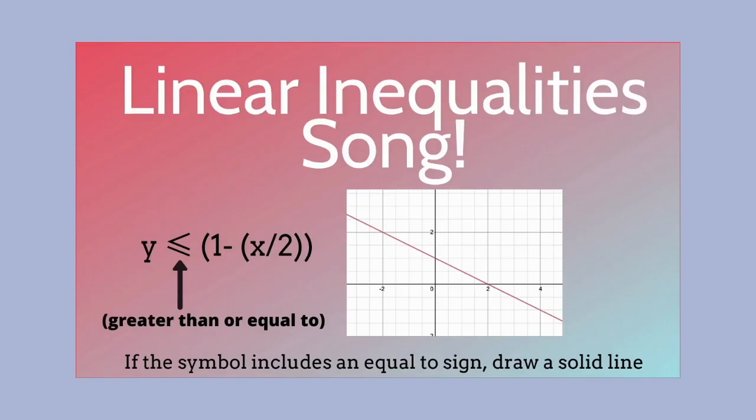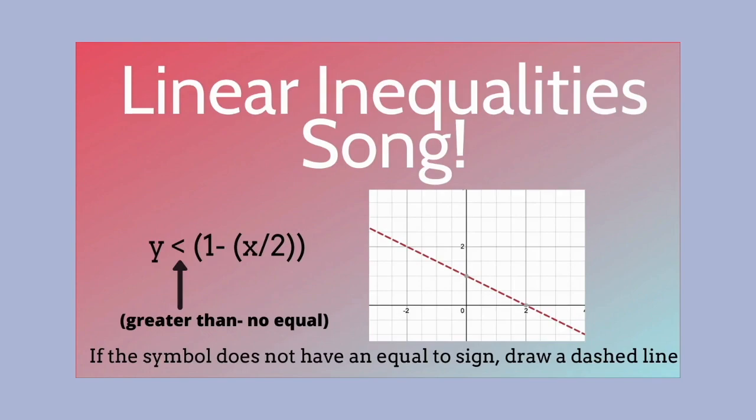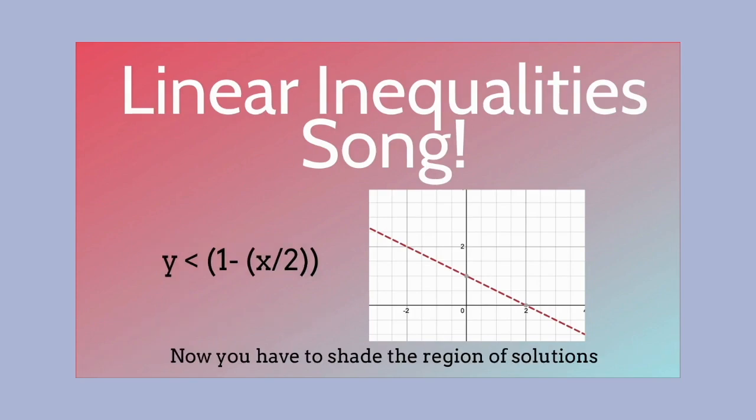Here is how to graph and shade linear inequalities. If the symbol includes an equal to sign, draw a solid line. If the symbol does not have an equal to sign, draw a dashed line. Now you have to shade a region of solutions.